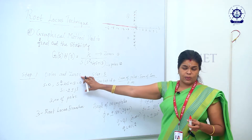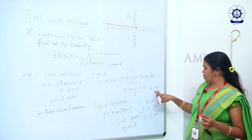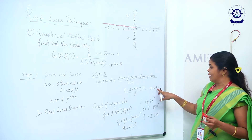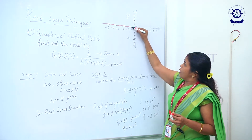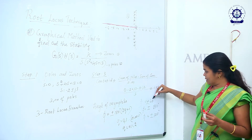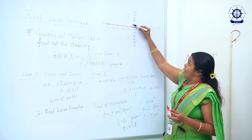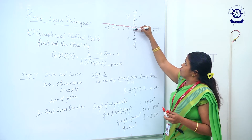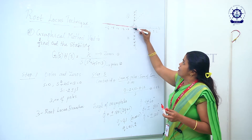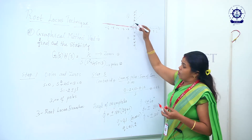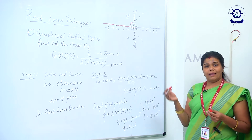We have found the poles and zeros, plotted them on the graph, and found the centroid at −1.33. From this centroid point, we draw the asymptotes at 60°, 180°, and 300°, which is a multiple of 60°. This centroid point at −1.33 is marked on the graph with the asymptotes drawn through it.